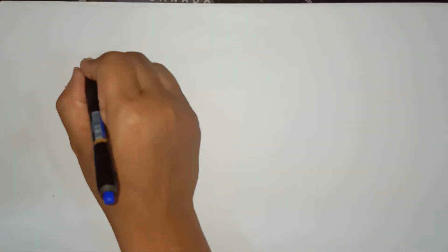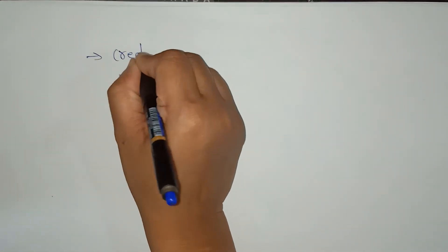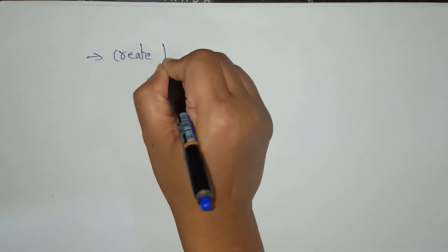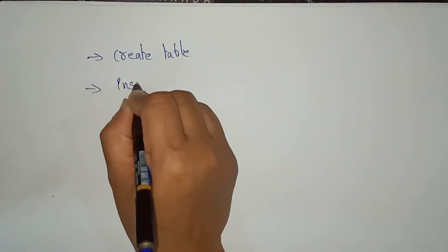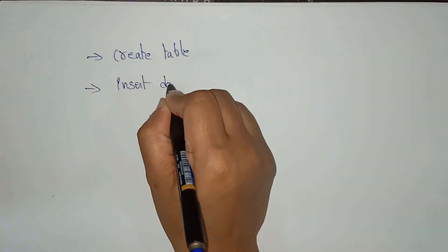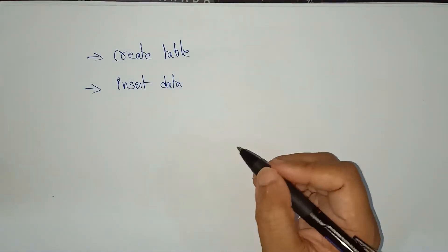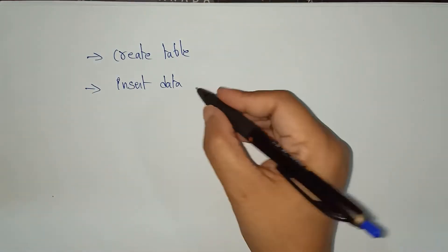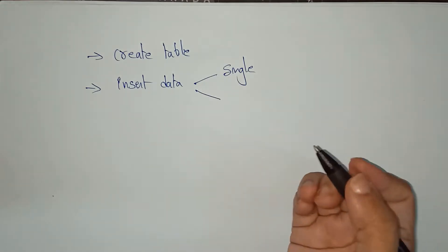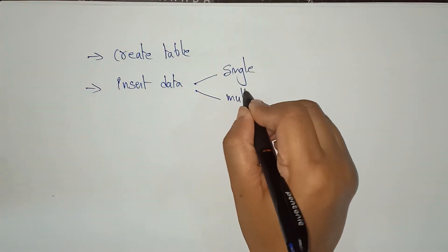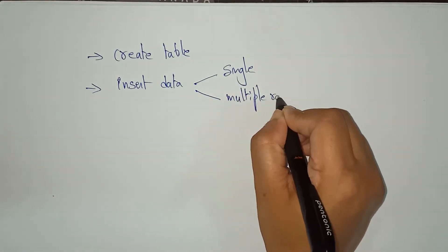Welcome back, students. Coming to the next topic: SELECT star. So far we have discussed how to create a table using a JDBC program, how to insert data into a table using a JDBC program — inserting a single row and multiple rows.